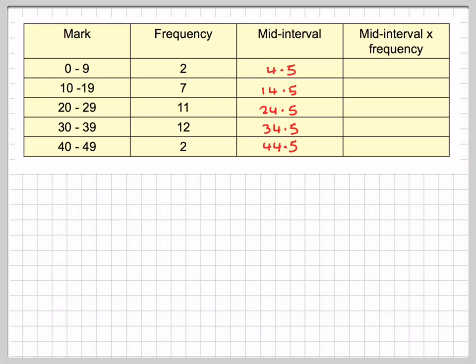Then we calculate the mid-interval times the frequency. We do 4.5 times 2, which gives 9; 14.5 times 7, which gives 101.5; and 24.5 times 11, which gives 269.5.